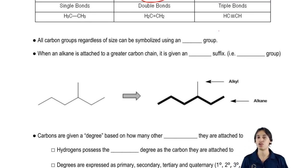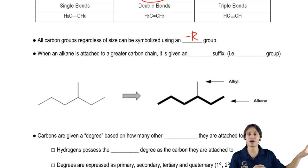All carbon groups, regardless of their size, can be symbolized using what's called an R group. This is something that we use every single day in organic chemistry. Your R group is, pardon my French, the 'I don't give a shit about this part' group.